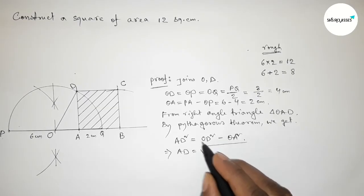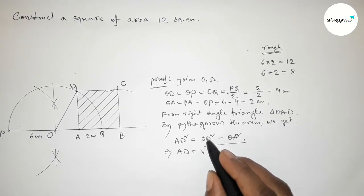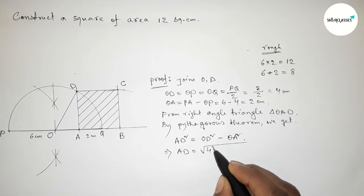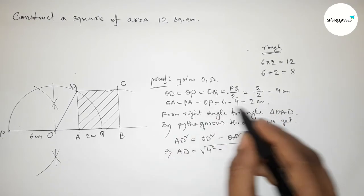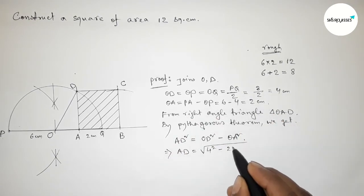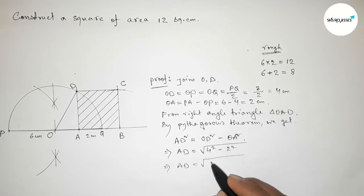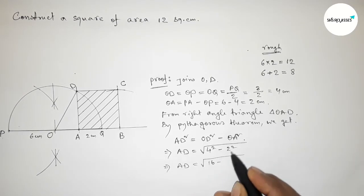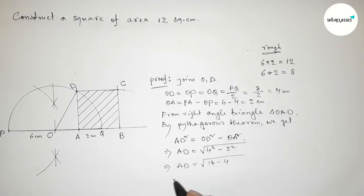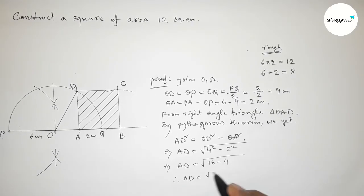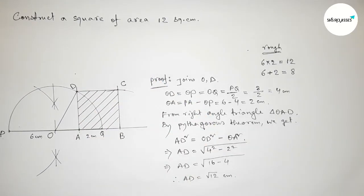This implies AD equals the square root of four squared minus two squared — that is, root of sixteen minus four. Therefore the value of AD equals root twelve centimeters.